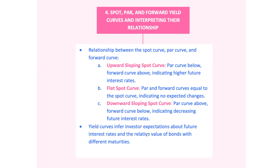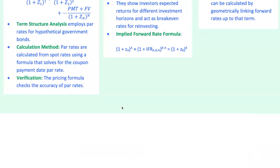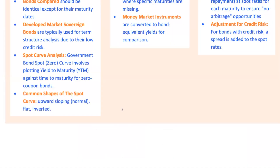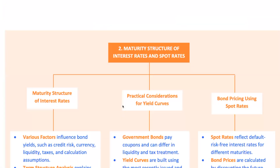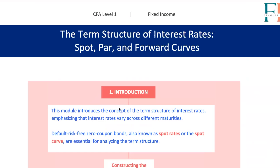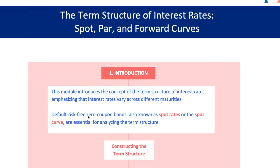And there you have it. Understanding the term structure of interest rates and the relationship between spot, par, and forward curves is essential for making smart investment decisions. These concepts help you predict market movements, assess bond valuations, and strategize like a pro. Keep practicing these calculations, and soon you'll be reading these curves like a seasoned analyst. Until next time, stay curious and keep crunching those numbers.